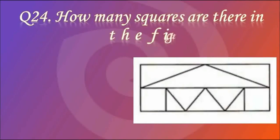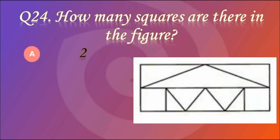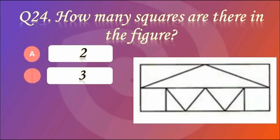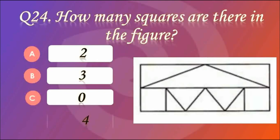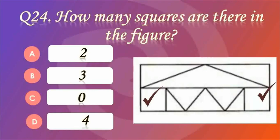Question number 24. How many squares are there in the figure? Answer A — there are two squares. We can see in the image there are two squares. So the right answer is option A — two.